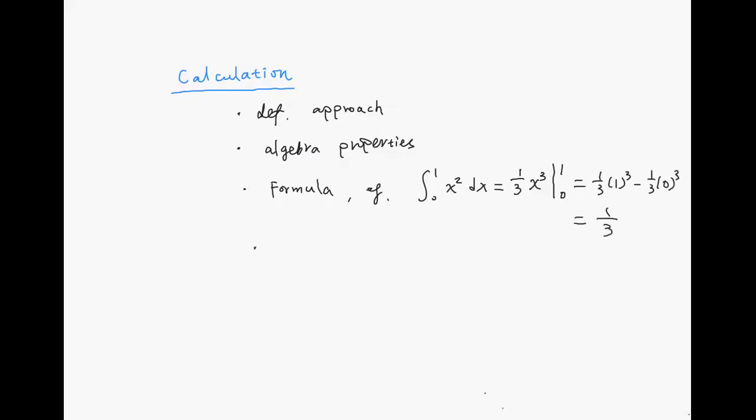More generally, this one is the so-called fundamental theorem of calculus. That means this one can be computed as capital F(B) minus capital F(A). And we call the function Fx capital Fx to be the antiderivative of the function f.